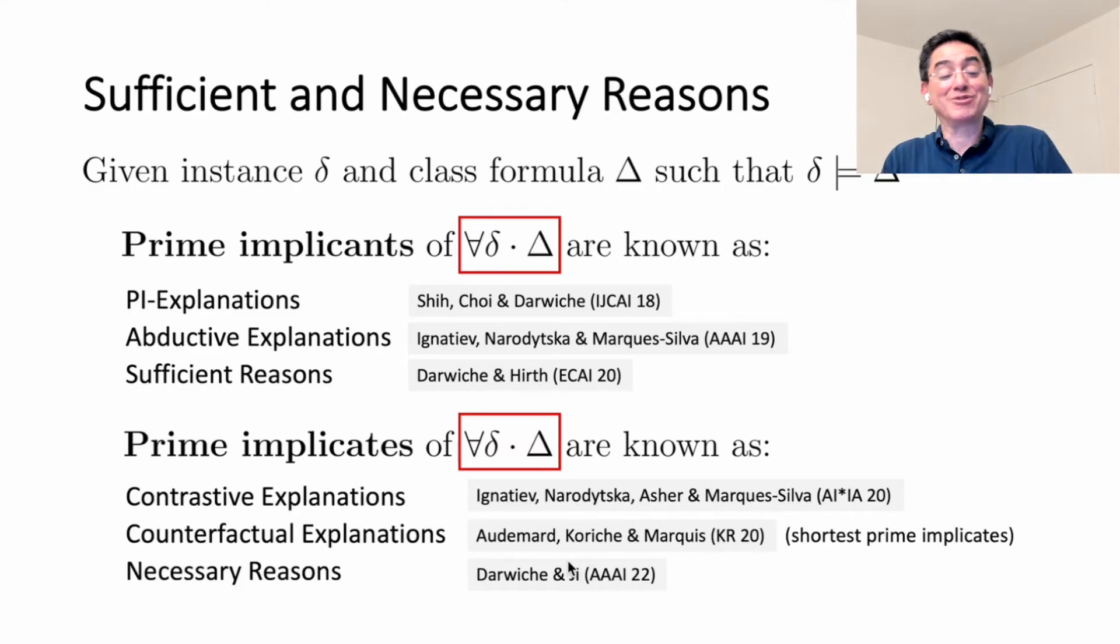We also know more recently that the prime implicants of this quantified Boolean formula correspond to what people have been studying under the labels of contrastive explanations, counterfactual explanations, and necessary reasons. These notions have quite a bit of applications, and they're just prime implicants and implicants of the quantified Boolean formula representing the complete reason.